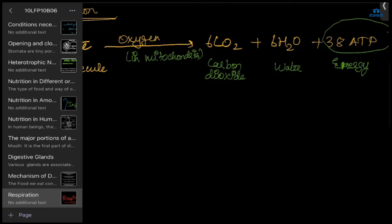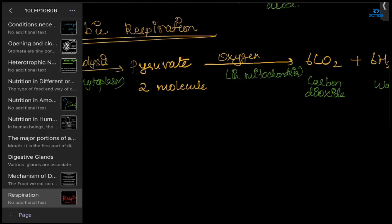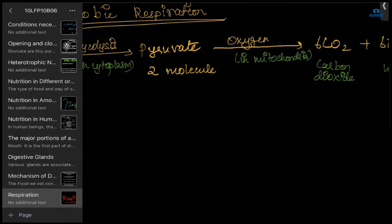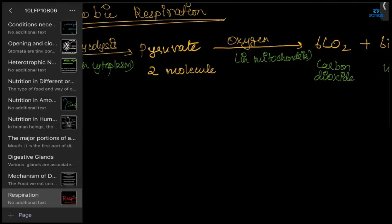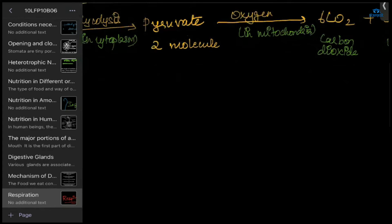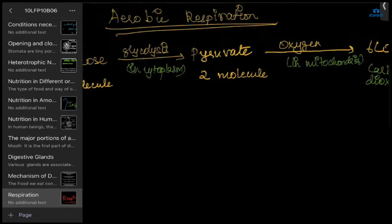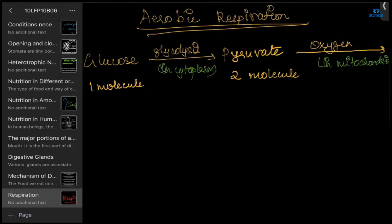Organisms that obtain energy by aerobic respiration cannot live without oxygen, because without oxygen they cannot get energy from food. The mitochondria is the site of aerobic respiration in the cells, and the energy released is used by the organism.